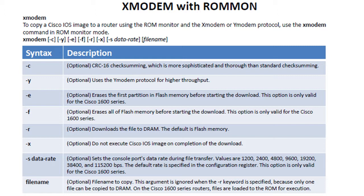In ROM mon mode, you issue the Xmodem command with a series of arguments. One interesting option is Y modem protocol for higher throughput — not sure if that's true, but the important arguments are setting the data rate. In IOS, you'd set this under the port configuration, but in ROM mon you don't have access to those commands, so you set the data rate here with the hyphen-S argument — for example, 'xmodem -s 115200.' Cisco labels it as BPS, which is technically not the same as baud.